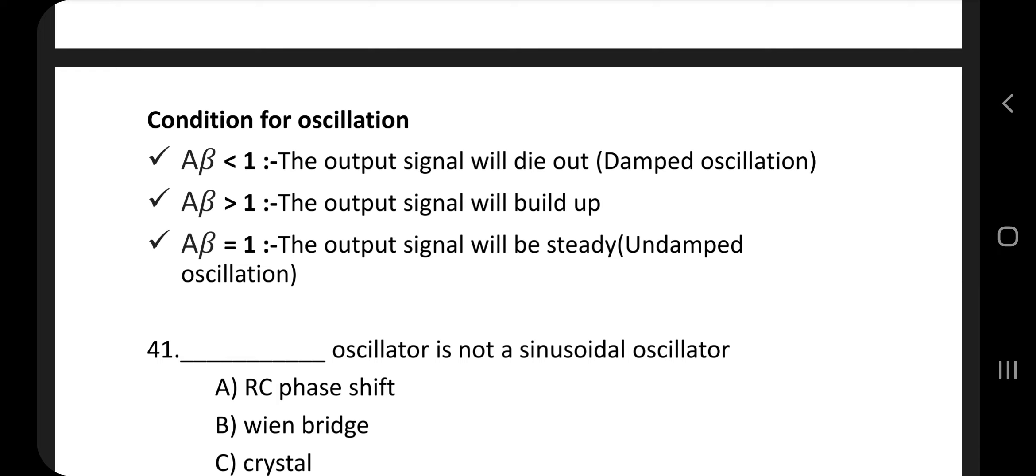A beta greater than 1, the output signal will build up. A beta equal to 1, the output signal will be steady, that is undamped oscillation.